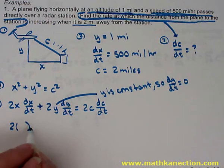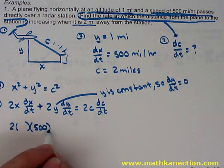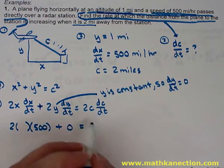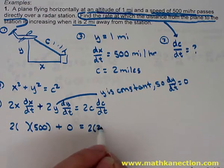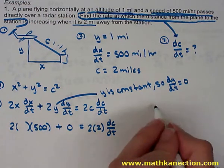So replacing the value of x, which we don't know yet, dx/dt, which is 500, plus, that will be zero because dy/dt was zero, value of c, which was 2, and dc/dt, again, we don't know, but that's what we're looking for.